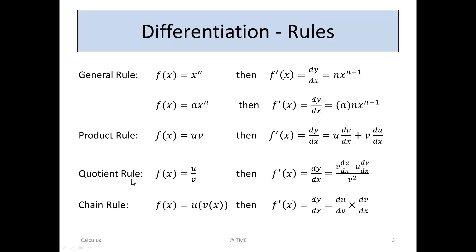In the case of the quotient rule, this is where f(x) is written as one function over another — we have a numerator and a denominator, both in terms of x. The formula, given in the tables, for the derivative f'(x) or dy/dx, is v times du/dx minus u·dv/dx, all over v squared. That formula is given and we'll use it for a quotient example.